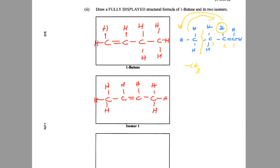So this is what we have for isomer two. In the middle carbon two, we're putting on the methyl group, so that's CH3, drawing it out fully displayed. We swapped places with the hydrogen and put that back on, then put the two hydrogens on the remaining carbon. So we have: one-butene, two-butene, and two-methylpropene.